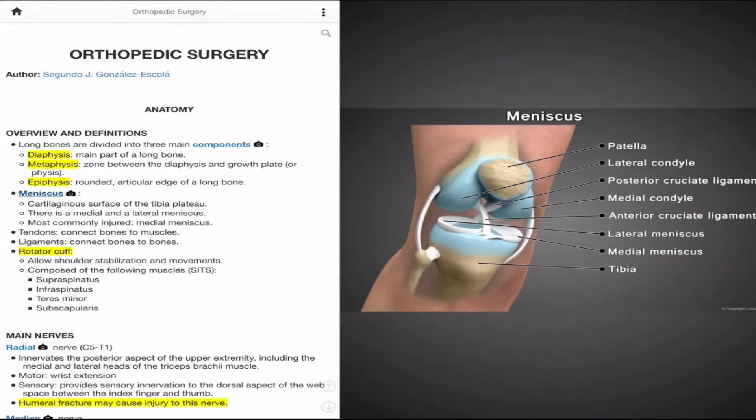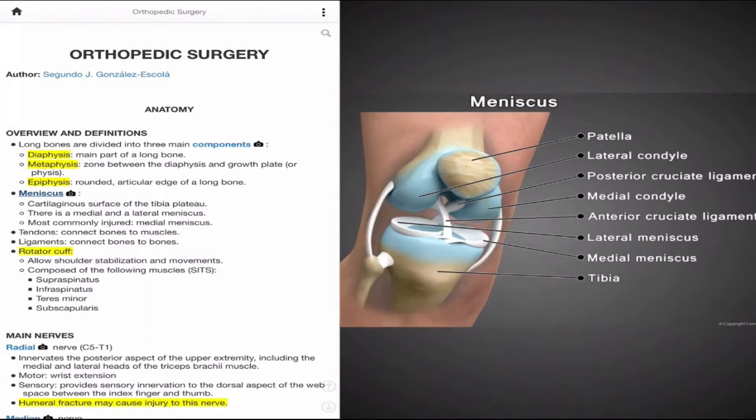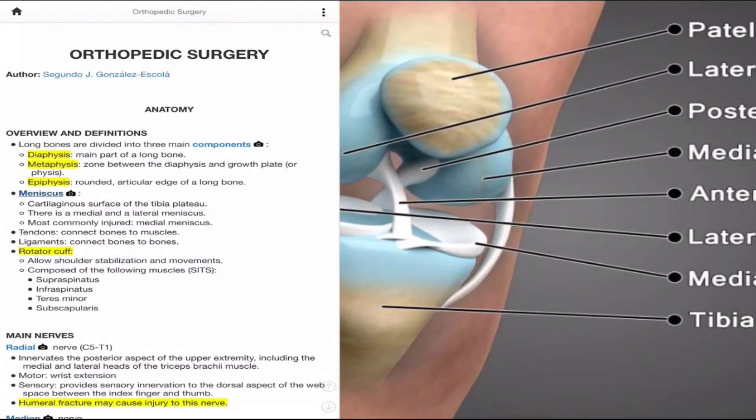The meniscus is a tough, C-shaped cartilage that serves as a pressure absorber between the femur and the tibia. We have a medial and lateral meniscus. The lateral meniscus is often more circular in shape, while the medial meniscus is more C-shaped. It should be noted that the medial meniscus is more commonly injured due to its close relationship with the medial collateral ligament, or MCL. Therefore, injury to the MCL will also often involve the medial meniscus.